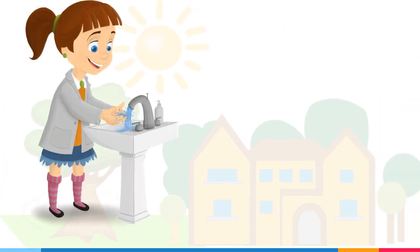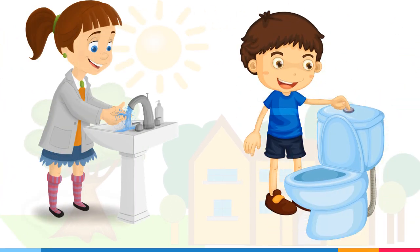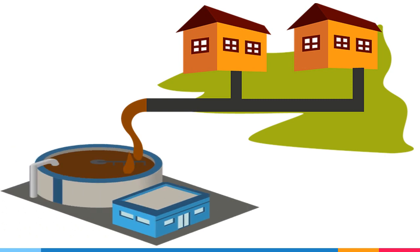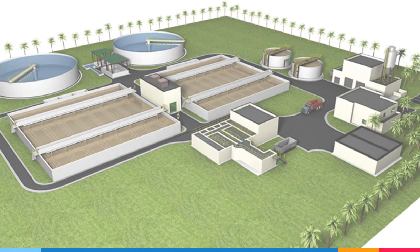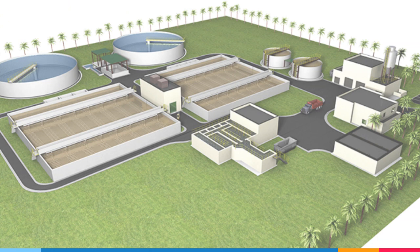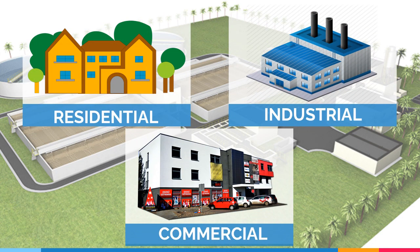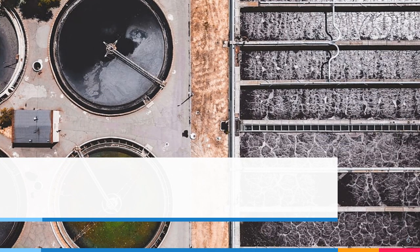The moment we wash our hands or waste flushes down the toilet, it travels down in a lateral to a main pipe through the wastewater plant. Wastewater travels through miles of pipes before arriving at the plant from residential, industrial, and different commercial buildings throughout the city. If you ever wonder where it goes, and more importantly, where it ends up, we will attempt to answer that question by taking you through the entire process.